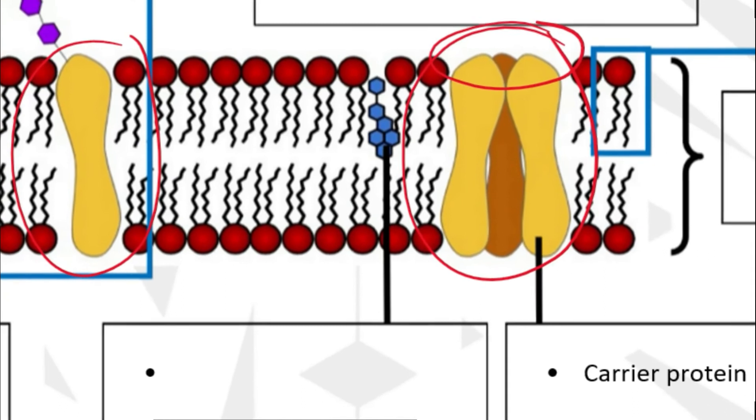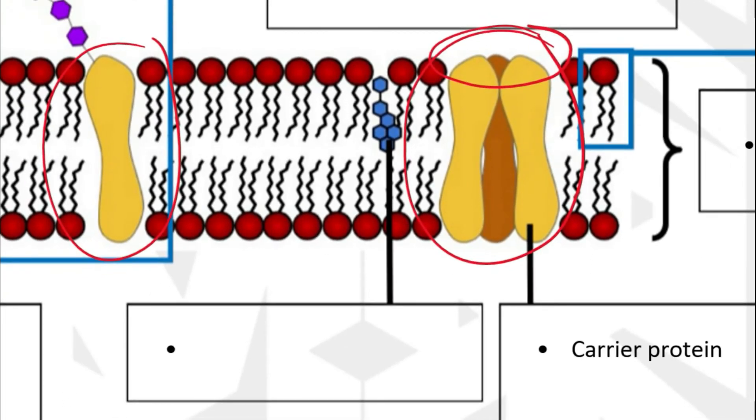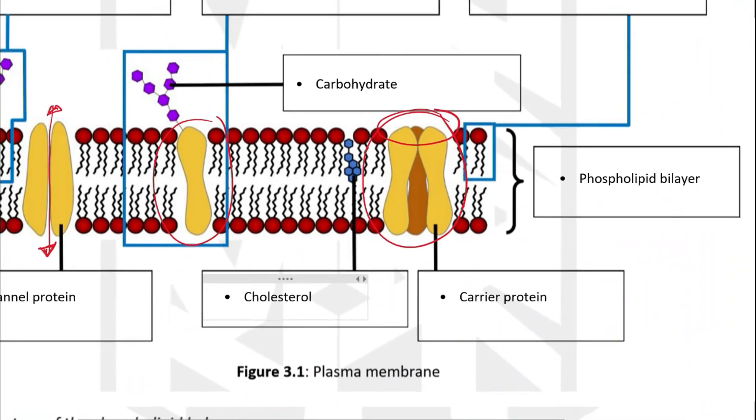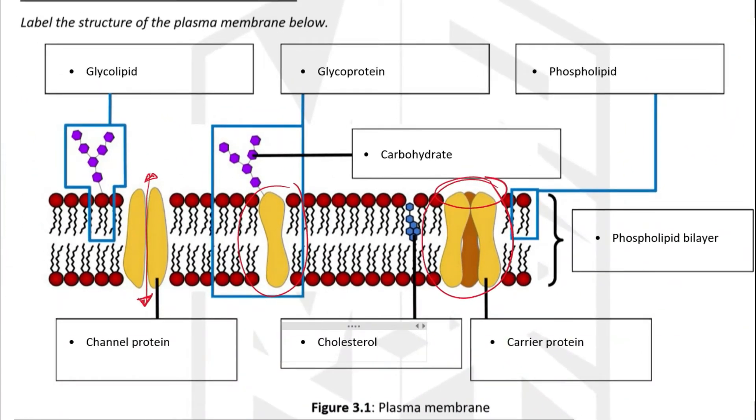We have one more substance here. This substance that is wedged between the phospholipids. This is actually cholesterol. And so these are all the components that form the plasma membrane.